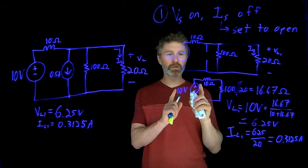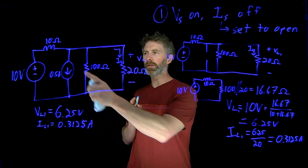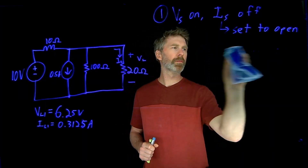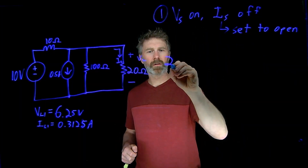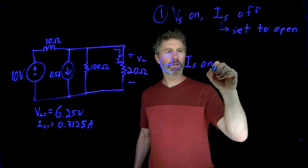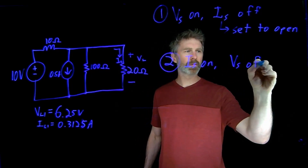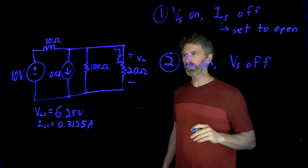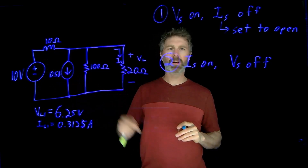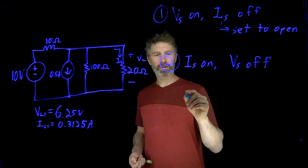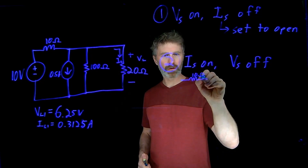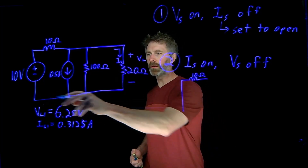Now we're going to do a similar analysis, but with the current source turned on and the voltage source turned off. Step two: current source on, voltage source off. To turn a voltage source off, we create a short — when the voltage source is set to zero, it acts as a short in the circuit. So we'll have that 10 ohm resistor there, but now it's just a short straight to the common reference.